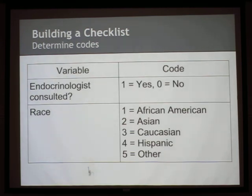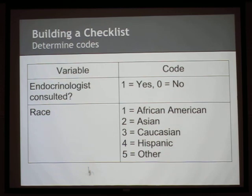Determining codes: if a patient has diabetes, you may or may not want to consult an endocrinologist, and different races have different rates of diabetes, so you'd want codes for those variables. This is about putting in a number so the computer can recognize it and do calculations on it. Coding is entirely about making it easier for yourself to analyze your data later.